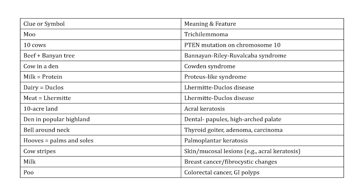Here's a brief summary: The cow went moo — trichilemmoma. There were 10 cows total — Cowden Syndrome is associated with PTEN mutation on chromosome 10. The sacred cow resting under the banyan tree gives us Bannayan-Riley-Ruvalcaba Syndrome. Cow in a den — Cowden Syndrome. Cow's milk is rich in protein — Proteus-like Syndrome. Dairy and meat — Lhermitte-Duclos Disease.